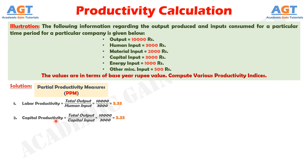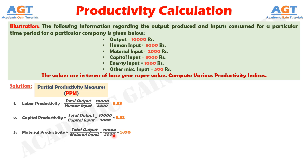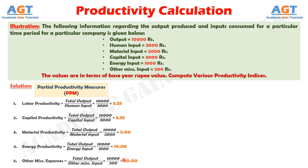The capital productivity is obtained by dividing the total output by the capital input. The value of output is 10,000 rupees and the value of capital input is 3,000 rupees, so we get a capital productivity of 3.33. The material productivity is obtained by dividing the total output by the material input. The value of output is 10,000 rupees and the value of material input is 2,000 rupees, so we get a material productivity of 5. Similarly, we get a productivity of 10 for energy and a productivity of 20 for other miscellaneous expenses. These were the calculations for partial productivity.